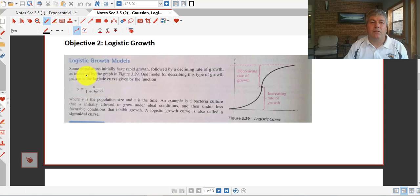Some populations initially have a very rapid growth, followed by a declining rate of growth. This might be something that we had hoped we'd see with the COVID-19, where it grew rapidly, but then we were hoping it was going to level off. So that is called a sigmoidal curve, and they've got the standard function listed down here, where y is the population size and x is our time.